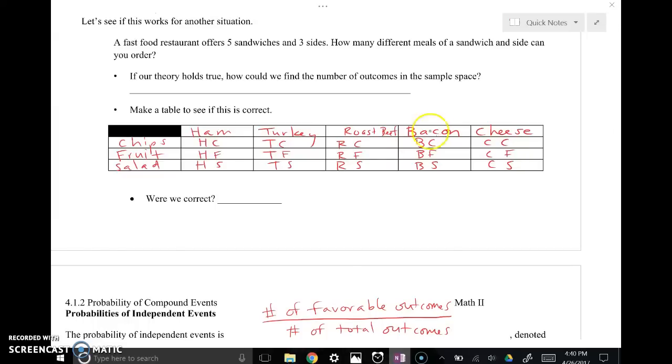So with one, two, three, four, five different sandwiches and one, two, three different sides, that gave me a total sample space of fifteen different combinations of a sandwich and a side. So if our theory holds true, that means fifteen should have been five sandwiches times three side options, and that indeed is correct. So we can use the number of options in each category to then multiply by the number of options in other categories to get the total number of options outcomes.